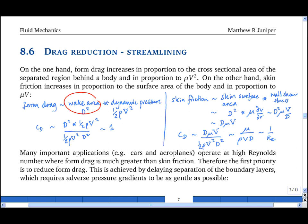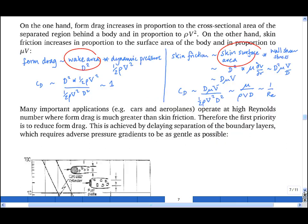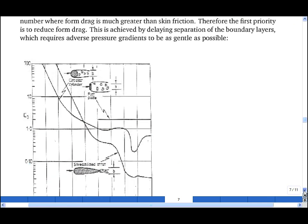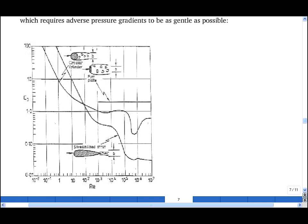And when the drag is predominantly skin friction, then we can do as much as we can to reduce the skin surface area, because we can't do much to change the wall shear stress. And this determines our drag reduction strategies for different shaped objects at different Reynolds numbers.